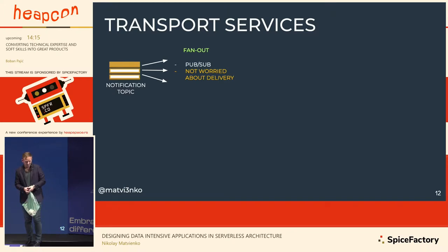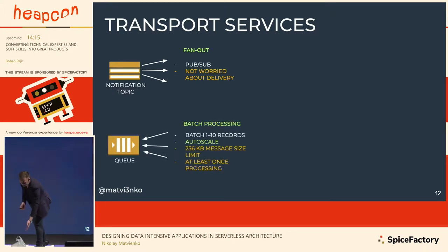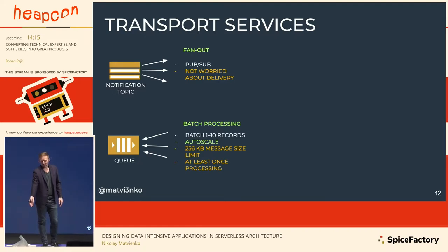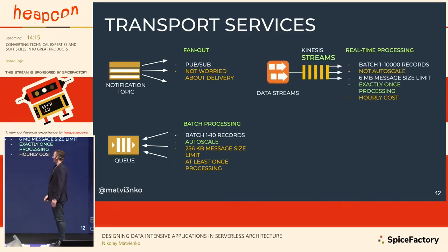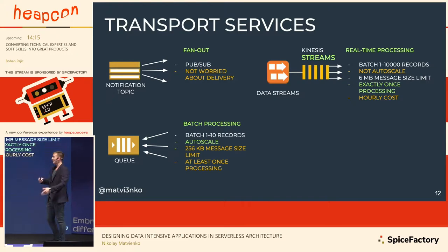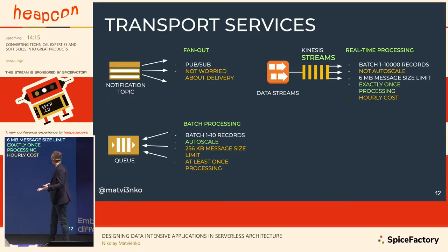Alternatively, you can put the candies in a queue — like SQS — where everyone can come and take one. It's more reliable because messages stay there, and it auto-scales. Or you can use a stream, which is much faster — you can deliver up to 10,000 records at once — but you have to pay per hour, it's expensive, and it's not fully serverless.